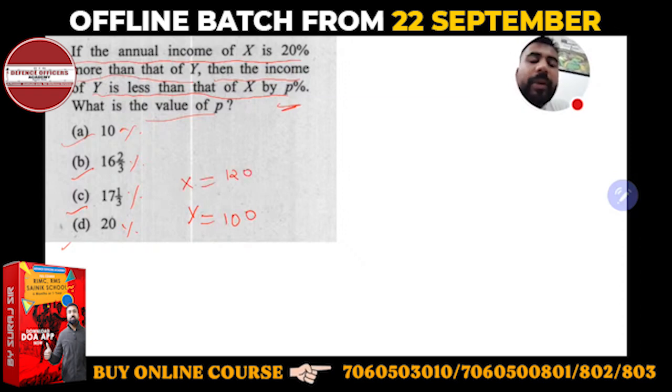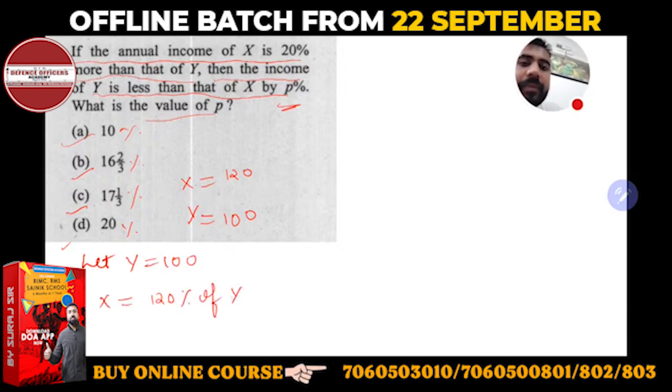is 20% more than Y. So X is 20% more than Y equals 100, so X is equal to 20% more of Y. If we calculate this: 120 upon 100 into Y is 100, 100 cancel. Or Y or X kitna aagya hamara? X aagya hamara 120.